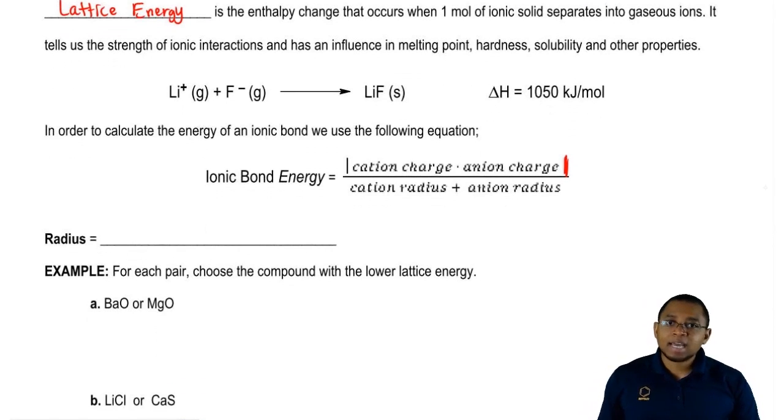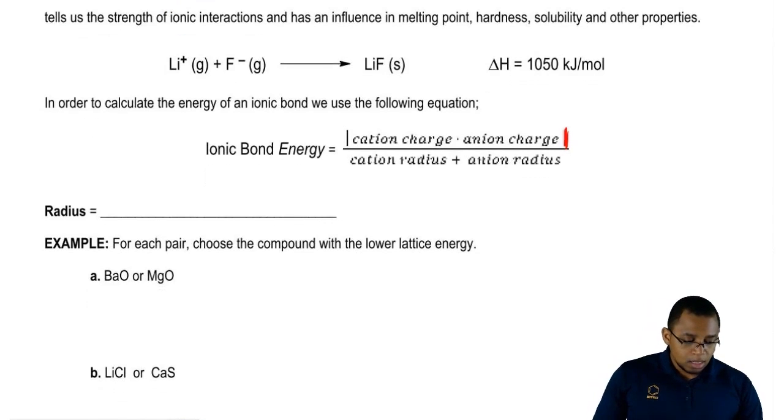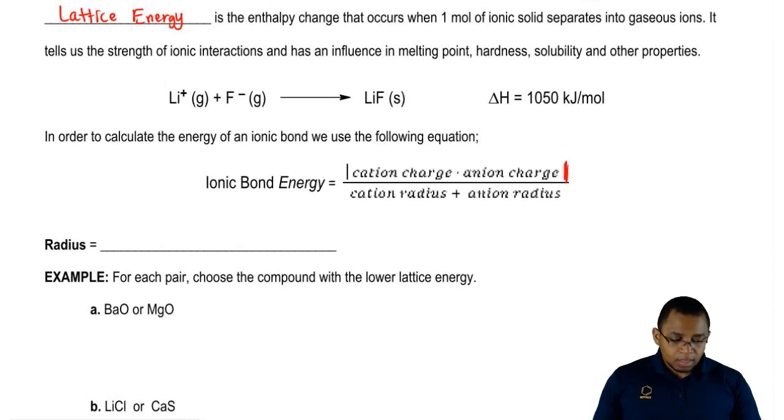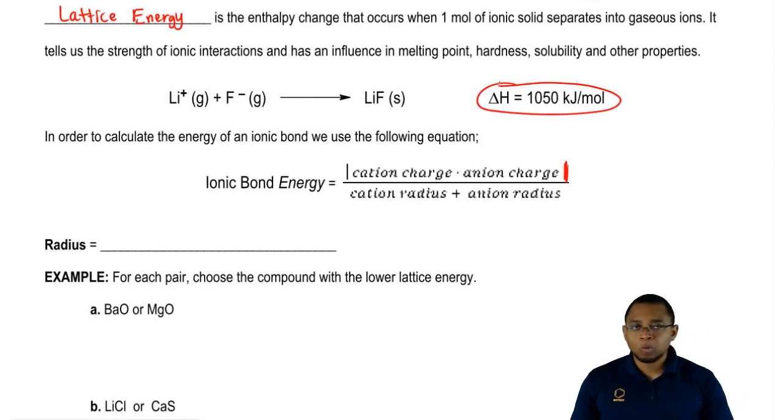A good example of lattice energy would be Li+ gaseous phase with F- gaseous phase combining to give us LiF solid. Delta H would be 1050 kilojoules per mole. This is how much energy would be required to break up lithium fluoride.